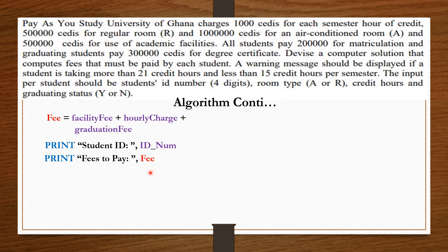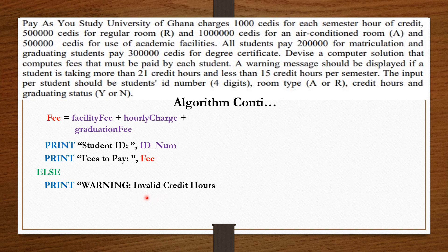The else branch goes with the initial if statement which checked the credit hours. According to the question, a warning message should be displayed if a student is taking more than 21 or less than 15 credit hours per semester. So we print a warning: invalid credit hours. All right friends, we are through with the algorithm.